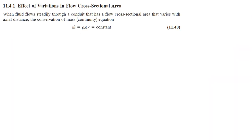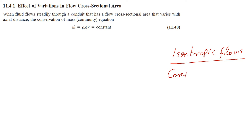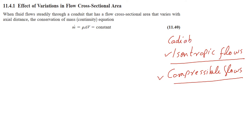Now let's talk about isentropic flows. Isentropic flows have constant entropy, and we study them in the context of compressible flows. For a compressible flow to be isentropic, two conditions must hold: the flow must be adiabatic and frictionless.